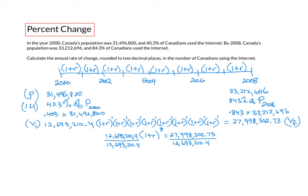After dividing, the initial values cancel, and we're left with (1 + r) to the eighth equals 27 million divided by 12 million, which gives us 2.20577002. We'll keep as much accuracy as possible at this stage.